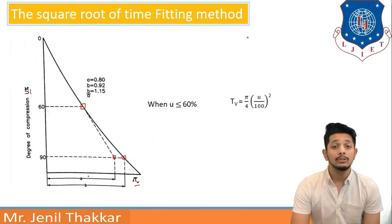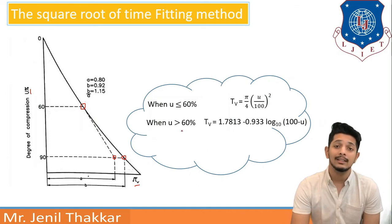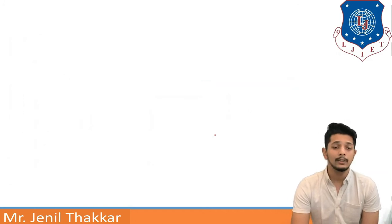We should also remember that we have studied in Terzaghi's theory that when u is less than 60 percentage tv will be pi by 4 into u by 100 square and when it is u is greater than 60 percentage then tv will be 1.7813 minus 0.933 log 10 base 100 minus u. This is our old equation. Let us move further.